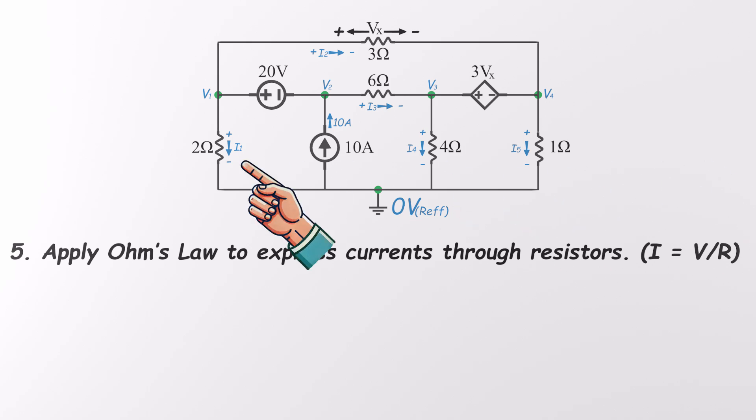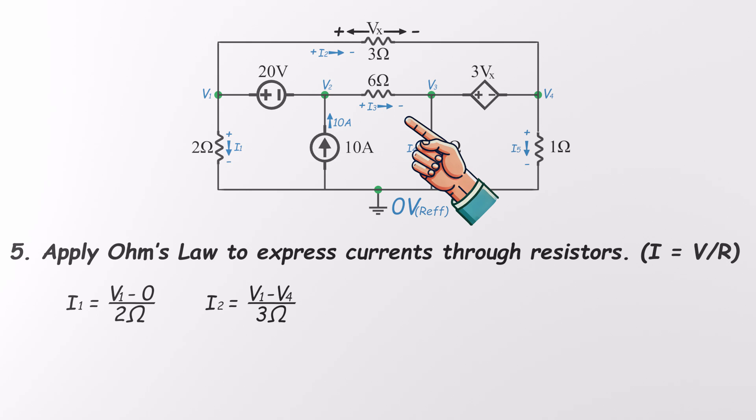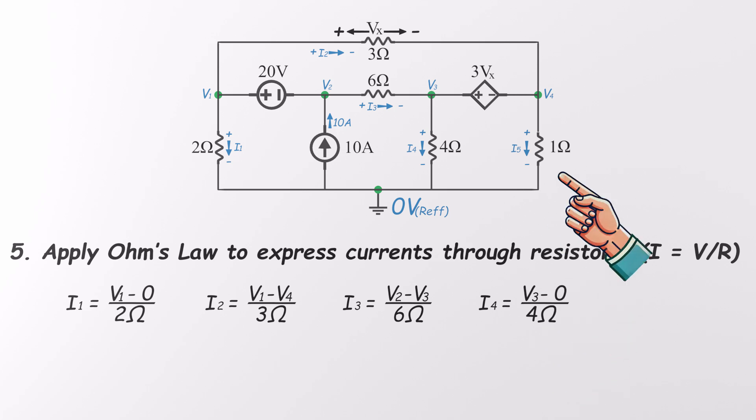For the 2 ohm resistor between V1 and ground, I1 equals V1 minus 0 divided by 2. For the 3 ohm resistor between V1 and V4, I2 equals V1 minus V4 divided by 3. For the 6 ohm resistor between V2 and V3, I3 equals V2 minus V3 divided by 6. For the 4 ohm resistor from V3 to ground, I4 equals V3 divided by 4. And finally, the 1 ohm resistor between V4 and ground, I5 equals V4 divided by 1. Now we've got all our resistor currents, I1 through I5, written in terms of the node voltages V1, V2, V3, and V4. With these expressions ready, it's time to apply Kirchhoff's current law and start cracking those voltage values.